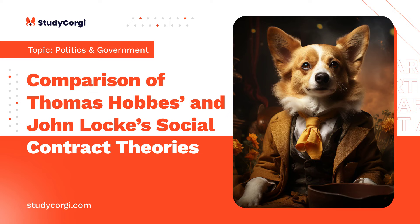Hobbes' theory includes some thoughts that are relevant these days — government should be powerful to protect stability. However, according to Hobbes, an effective sovereign does not transfer his right to self-government and is not bound by any law. If the USA adopted Hobbes' theory in practice, it should have been an absolute monarchy. On the contrary, the USA is a representative democracy with the separation of powers.